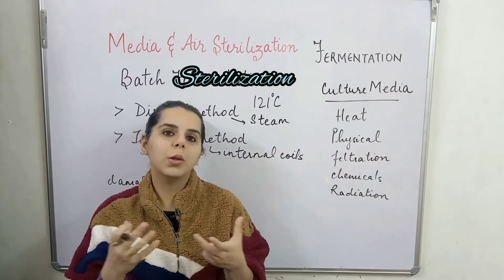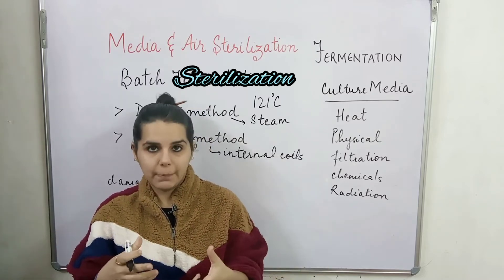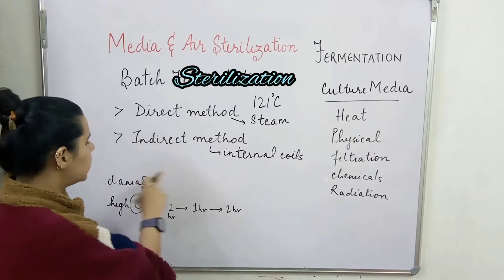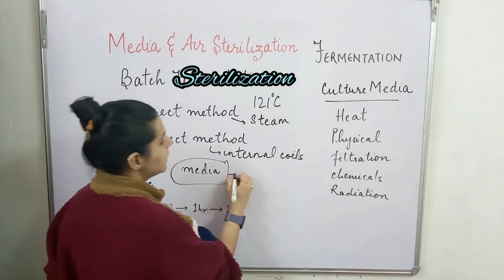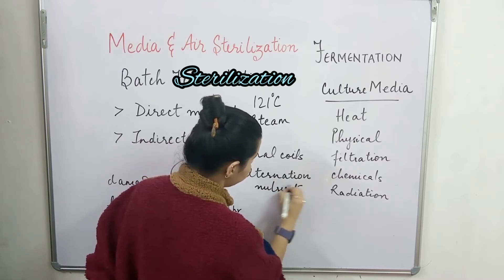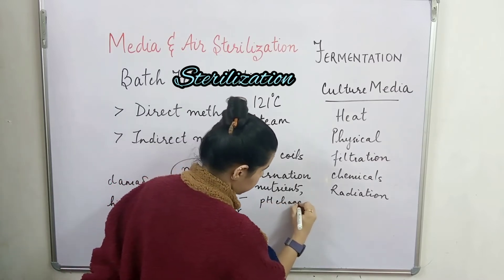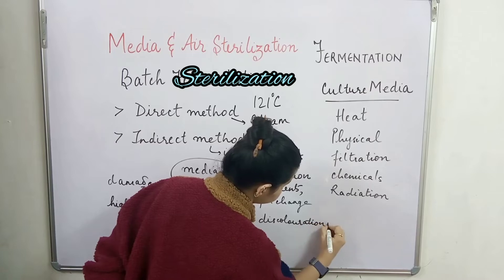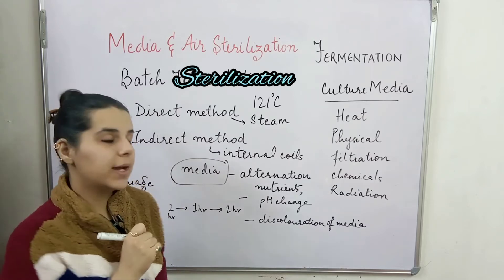This process leads to a lot of cost build-up — it is very expensive. Another disadvantage is that a lot of media damage occurs. The nutrients may get altered, there may be a pH change, and there may also be discoloration of the media. These are the main disadvantages associated with the batch sterilization cycle.